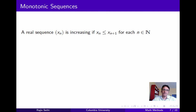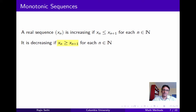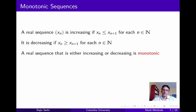Next we define monotonicity of sequences. We say that a real sequence xn is increasing if every term is less than or equal to its successor term, and decreasing if every term is greater than or equal to its successor term. A real sequence that is either increasing or decreasing is said to be monotonic.